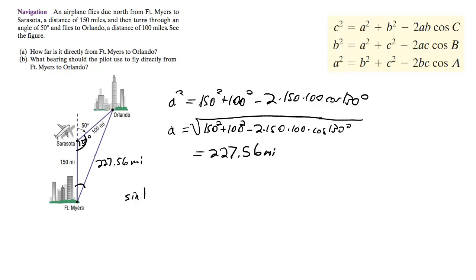So sine of 130 degrees over 227.56 is equal to sine of Fort Myers, I'll just call it A, over 100. Cross multiply and we get...